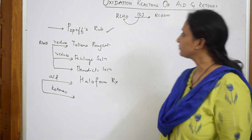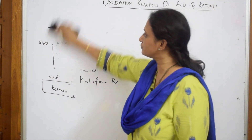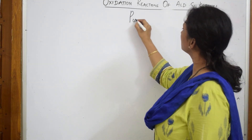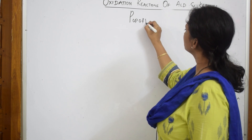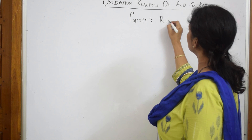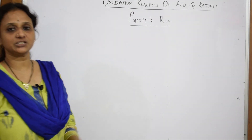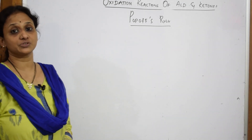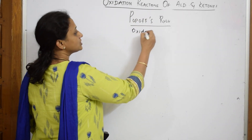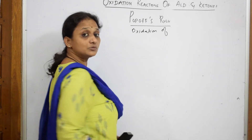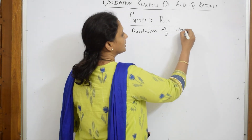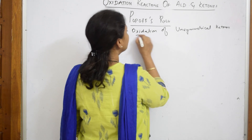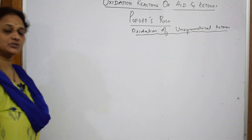Now let us write the heading: Pop-off's Rule. Aldehydes on oxidation give acids — that is not a problem. But Pop-off's Rule basically speaks about the oxidation of ketones. Which type of ketones? It speaks about the oxidation of unsymmetrical ketones. That is the only keyword you have to remember.